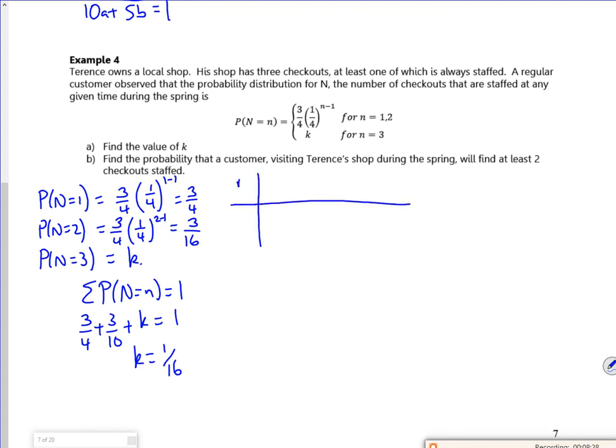In terms of a table, I've got n = 1 which was 3/4, n = 2 which is 3/16, and n = 3 which was k, but actually it's 1 over 16. Find the probability that a customer visiting Terence's shop during spring will find at least two checkouts open. So P(n ≥ 2) must be 3/16 plus 1/16, which is 4/16 or 1/4. I've got one more example left today.